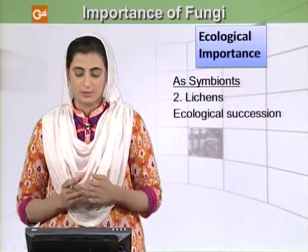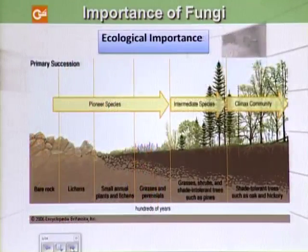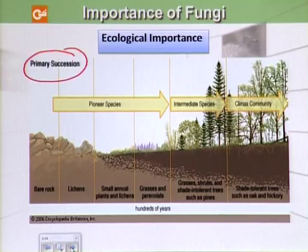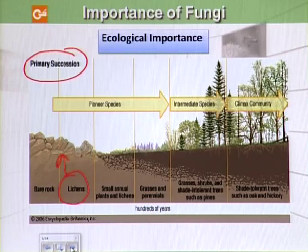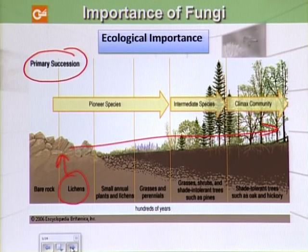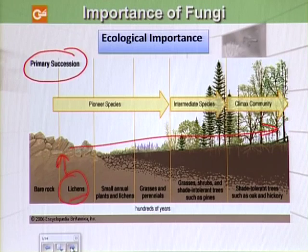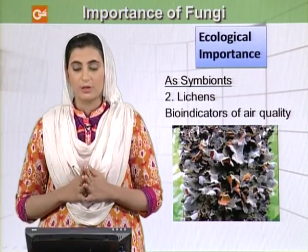Lichens have a role in ecological succession. We can see in the figure that in the case of succession or development of a plant community, lichens are actually the pioneers — they grow on bare soils or bare rocks. Afterwards the community develops through various steps, such as the formation of small annual plants or grasses, then perennials, and finally the formation of trees.